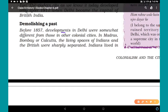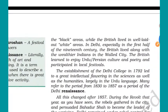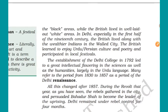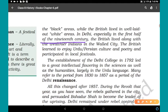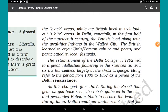Demolishing a past: Before 1857, developments in Delhi were somewhat different from those in other colonial cities. In cities like Madras, Bombay, or Calcutta, the living spaces of Indians and the British were sharply separated into 'black' and 'white' areas — Indians lived in the black areas while the British lived in the well laid-out white areas. In Delhi, especially in the first half of the 19th century, the British lived alongside wealthier Indians in the walled city.